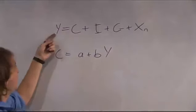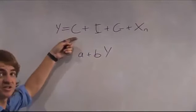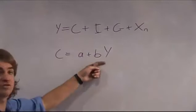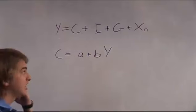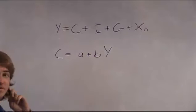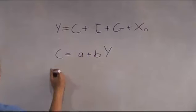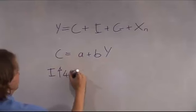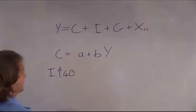So Y is a function of C, but C is a function of Y. Now let's see what would happen if investment increased by, let's say, 40 units.